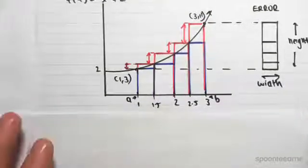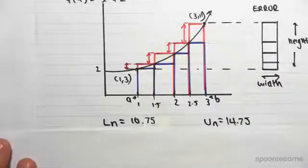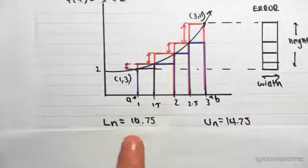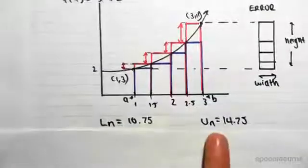One of which is very, very useful. So the first way is we found a lower Riemann sum in that video to be 10.75, and we found the upper Riemann sum in that video to be 14.75. So I've just written those out again.